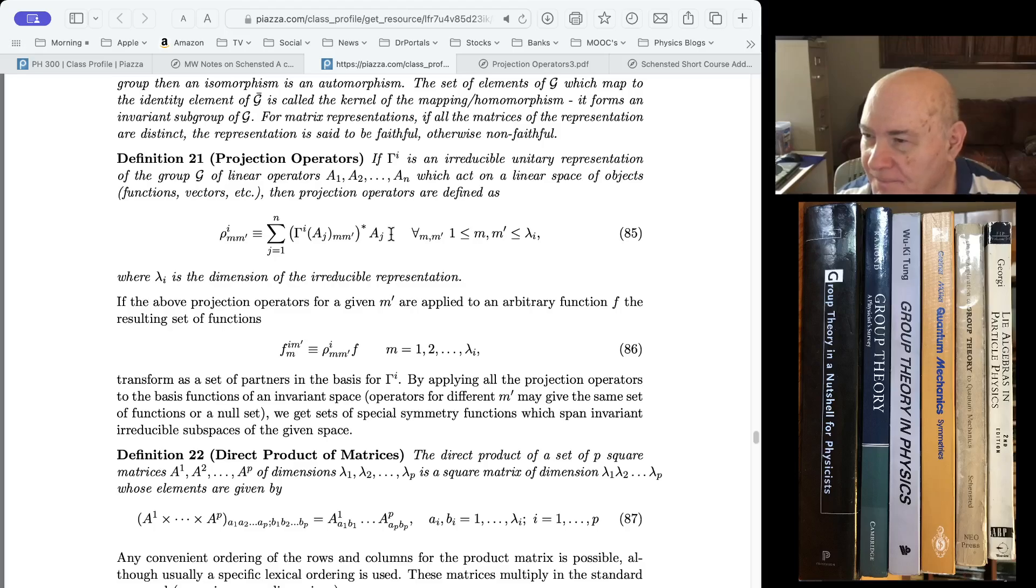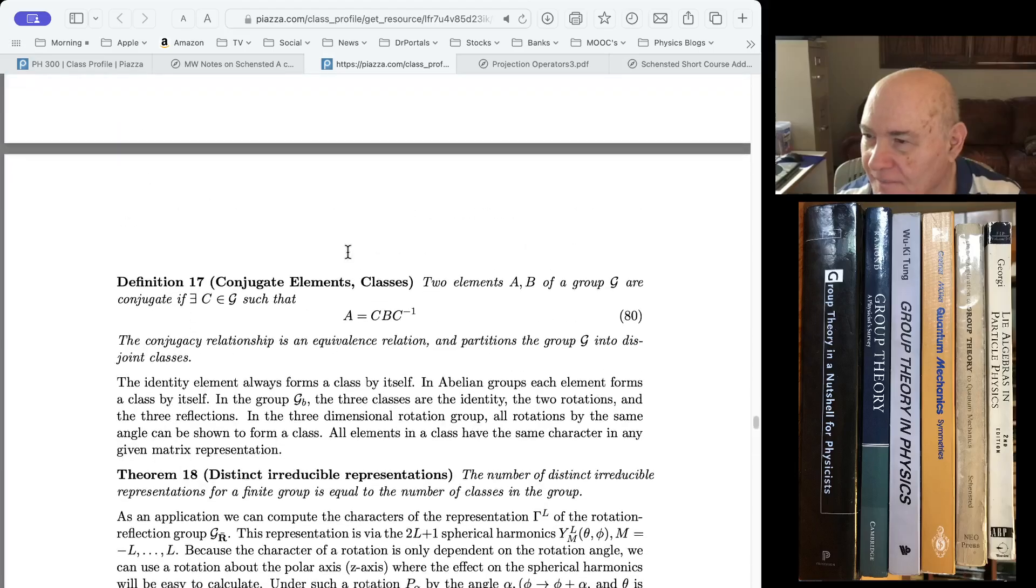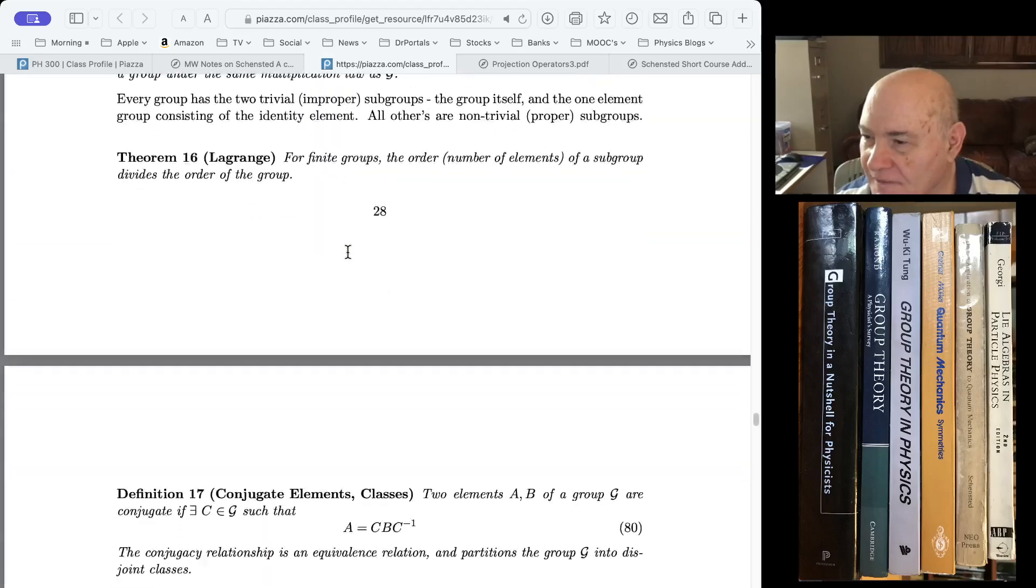So this is how you get the gamma I, these are the irreducible representation matrices. You get the coefficients from these matrices. Oh, I'm sorry. Let me go back.